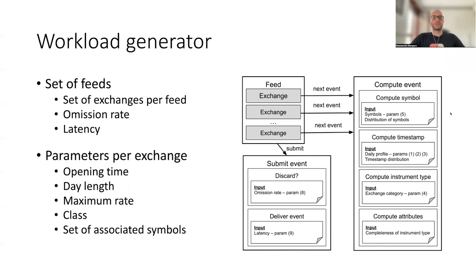So that was the model. Then based on the model, step two, we propose a workload generator that works as follows. We rely on a limited set of parameters shown on the left. There is a set of feeds, streams of events, with few associated features: the set of exchanges they include, the rate of event omissions, the latency of the communication channel with that feed. So recall that a feed is like a stream of data, a stream of events, and the exchanges are like the sources of events that are published through that stream.